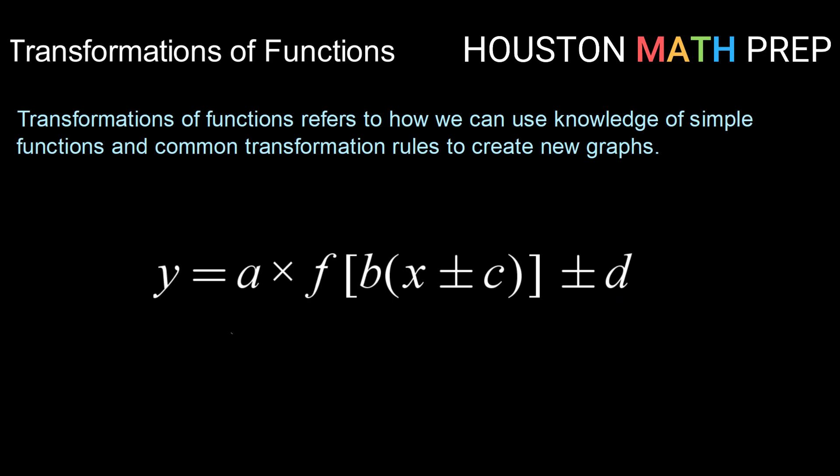This a value on the outside can do two things. The first thing it does based on whether or not it's positive or negative tells us if we have a reflection. So if a is negative, then we have a vertical reflection, and that would be over the x-axis. A reflection is a flip. So if we have a negative on the outside there, then we will have a flip over the x-axis.